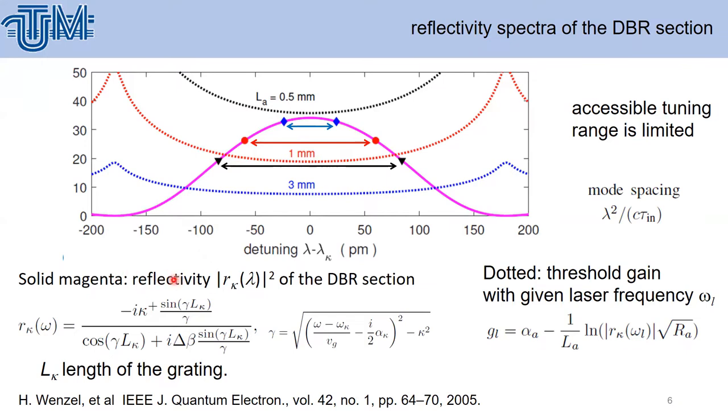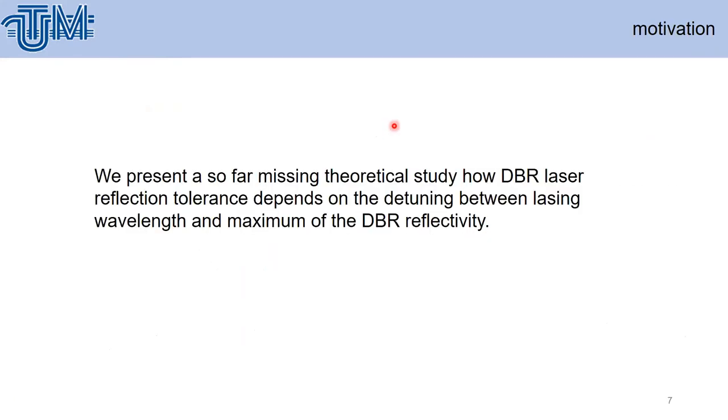In the case of 0.5 millimeter, 1 millimeter, and 3 millimeter. Solid magenta is the reflectivity of DBR section with the following formula. The dotted line shows threshold gain with given laser frequency omega L.